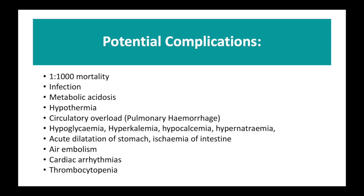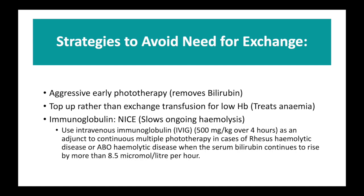It's important to be careful and only do an exchange when absolutely indicated. Early aggressive phototherapy can remove bilirubin, and top-ups rather than exchange transfusions can be used if the baby's haemoglobin is slightly low. The NICE guidelines also support using intravenous immunoglobulin — 500 mg per kg infused over four hours — as a good adjunct to continuous multiple phototherapy in cases of severe rhesus hemolytic disease or ABO incompatibility when bilirubin continues to rise by more than 8.5 micromoles per litre per hour. Hopefully you'll now see the video on how to set up the circuit for an exchange transfusion.